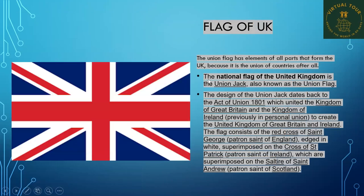The flag of the United Kingdom — the Union flag — has elements of all parts that form the UK. The national flag, also known as the Union Jack, dates back to the Act of Union 1801, which united the Kingdom of Great Britain and the Kingdom of Ireland. The flag consists of the Red Cross of St. George, edged in white, superimposed on the Cross of St. Patrick, which are superimposed on the Cross of St. Andrew.